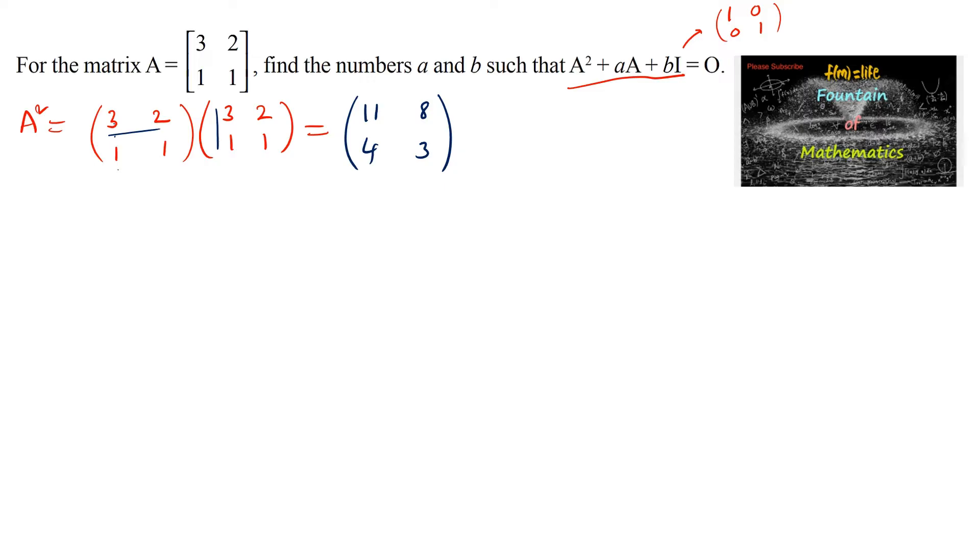Now we can write A² + aA + bI = 0. That is [11, 8; 4, 3] plus a times [3, 2; 1, 1] plus b times the identity matrix [1, 0; 0, 1] equals the zero matrix [0, 0; 0, 0].